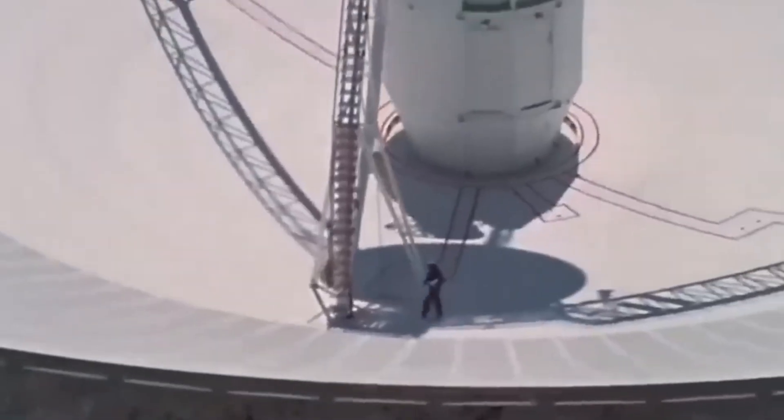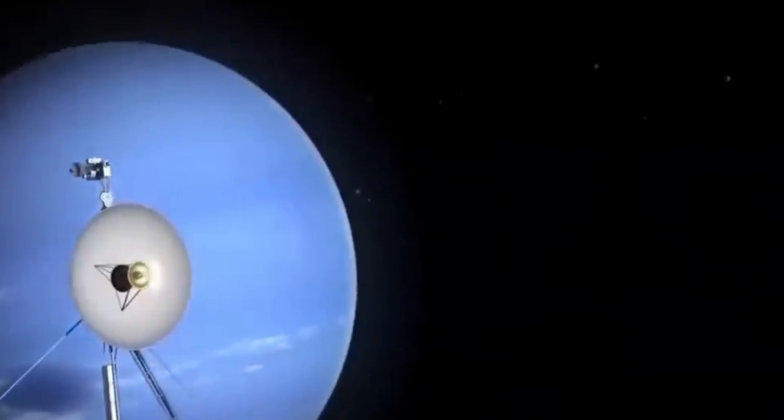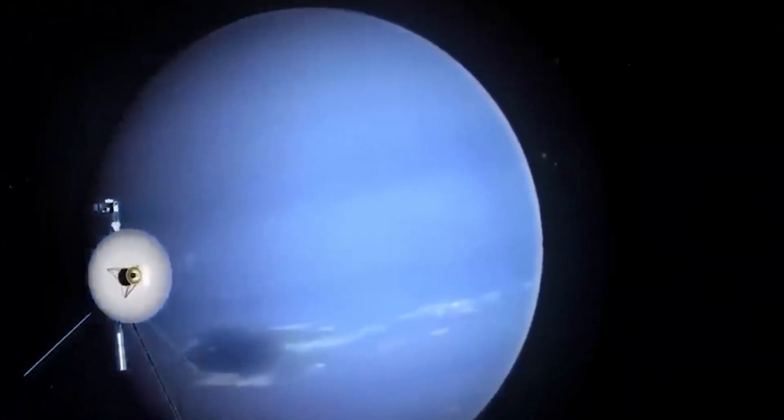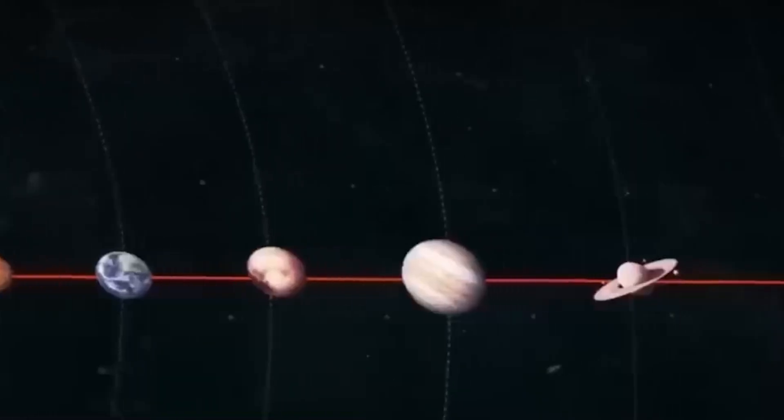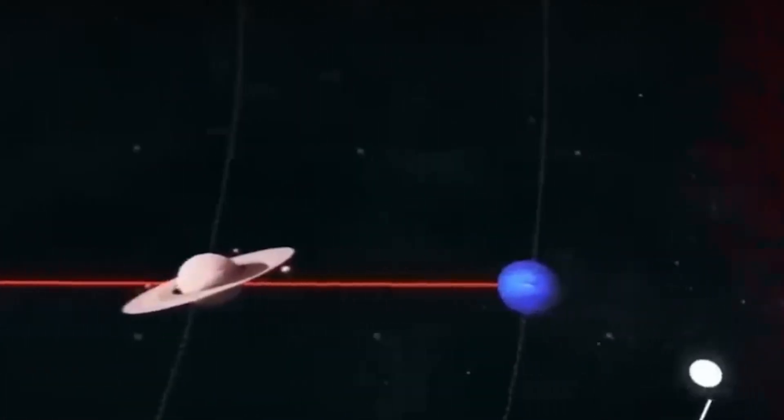NASA specifically chose to launch them during the periodic special alignment of planets, which allowed them to reach incredible velocity with numerous gravity assist maneuvers. This allowed Voyager 1 to race past its twin on December 15th, 1977.